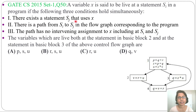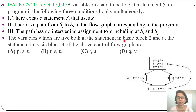First condition: there exists a statement sj that uses x. Second condition: there is a path from si to sj in the flow graph corresponding to the program. Third condition: the path has no intervening assignment to x, including at si and sj. The question asks which variables are live both at statements in basic block 2 and at statements in basic block 3 of the given control flow graph.